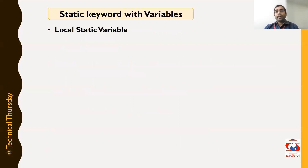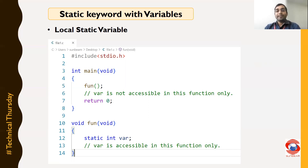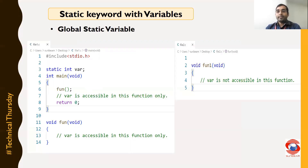Now let us understand when we use the static keyword with local variables. In this example, one variable is declared as static but it is declared inside function fun. That means the variable is accessible into that function only — it is not accessible outside the function. Inside main, that variable is not accessible. But when we declare the static variable globally, the static variable is accessible into that file only.